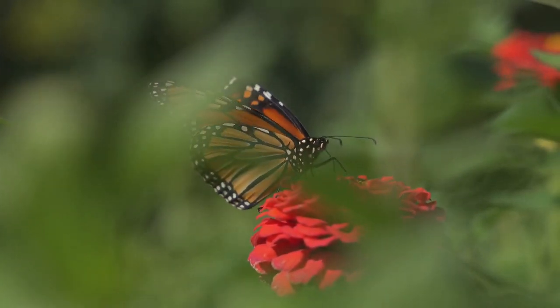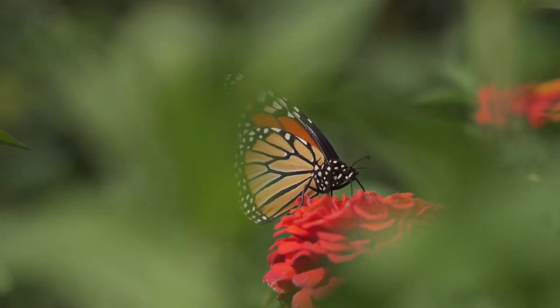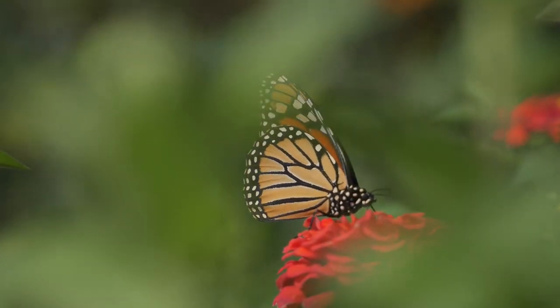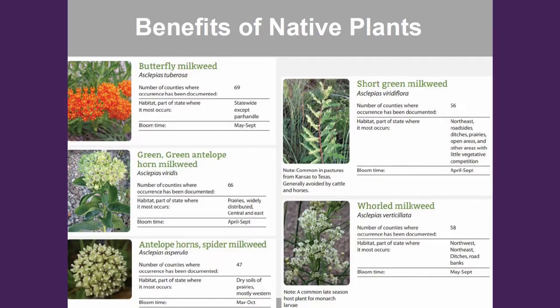Monarch butterflies are migratory — they spend their summers up in the Midwest and then go down to Mexico in the wintertime. We'll often see monarch butterflies in the spring and the fall here in Oklahoma as they make their migratory journey back and forth. We have a duty as Oklahomans to include a little rest stop for those monarch butterflies in our landscape. One of the best things you can plant for monarchs is milkweed. There are a lot of different species of milkweed available in garden centers, so consider the climactic conditions you have and what species of milkweed might be best.